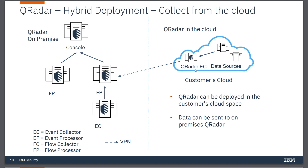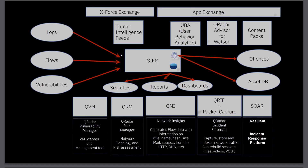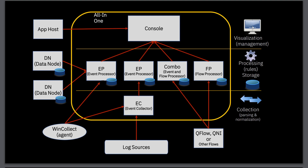The event processor is the component that performs correlation and rule analysis on the logs, and then sends that information to the console, which displays it in the user interface along with other functions. As you can see in this slide, your logs, flows, and vulnerabilities are all ingested by the SIEM, and it outputs offenses and information about your assets. You can also do searching, reporting, and dashboards. In this important slide you can really see how all the components relate to each other — log sources feed logs to the event collector, which feeds them to the event processor, which feeds all relevant information to the console.